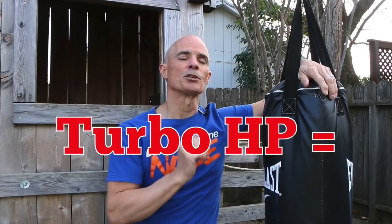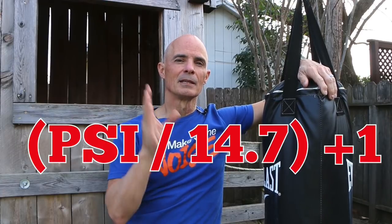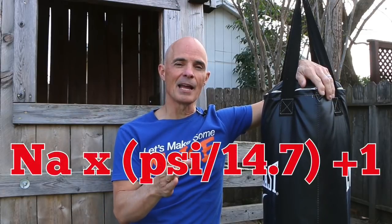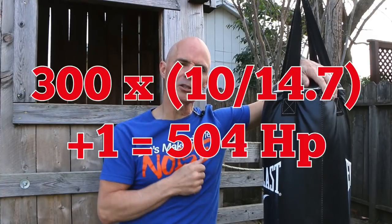Those should be pretty easy. So the formula is this: the power output of your turbocharged combination is equal to the power output of your NA combination times your boost pressure divided by 14.7 plus one. The NA power output times boost pressure divided by 14.7 plus one. That will give you the power output of your turbo combination.